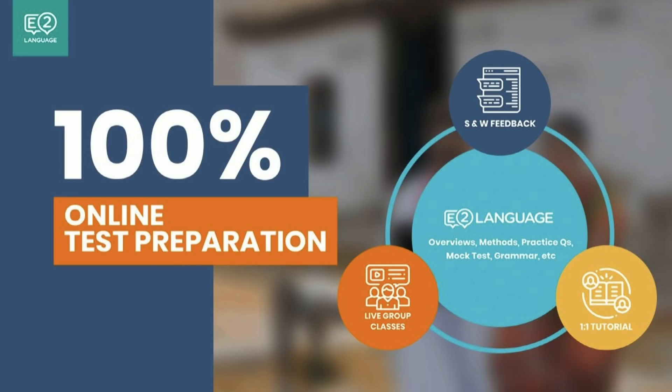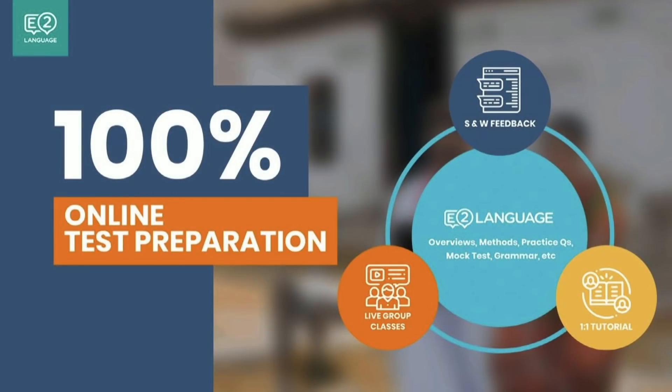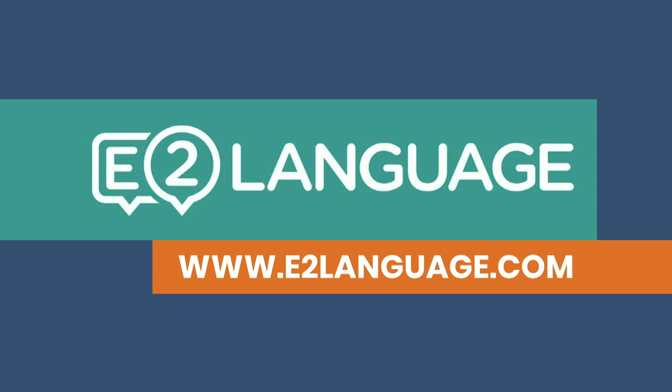If you need help with your PTE academic test in any way, you should think about signing up to e2language.com. We're 100% online. There's a central platform with overview lessons, methods lessons like these, including the express methods, lots of practice questions, mock tests, grammar lessons, and more. From the platform, you can book one-on-one tutorials — if you're having particular weaknesses in writing, speaking, or reading, you can choose the particular tasks you want to focus on, 45 minutes with an expert PTE academic tutor. There are also live group classes every Monday to Thursday for those aiming for 65 and 79. We also deliver speaking and writing feedback. Check out www.e2language.com.